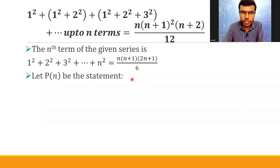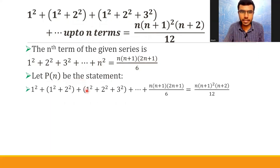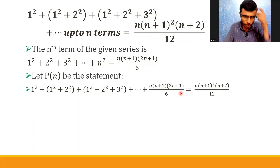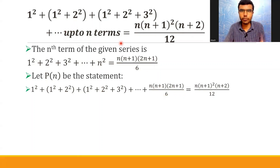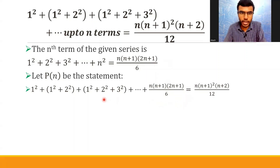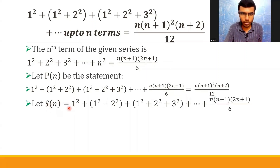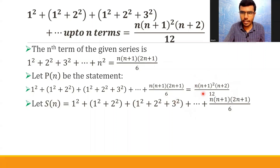Next, I'm going to take the given statement as P(n). Let P(n) be this statement. By now I know the n-th term, so instead of dot dot dot after n-terms, I wrote the n-th term and the RHS is as it is. The sum on the left side I'm taking as S(n), so this is naturally equal to the RHS also.